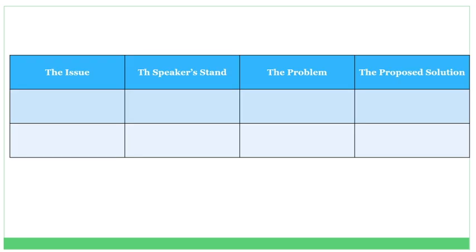Here is the table that you're about to fill in. There are four columns. First column: write the issue. Second column: the speaker's stand. Third column: the problem. And for the fourth column: you're going to write the proposed solution.